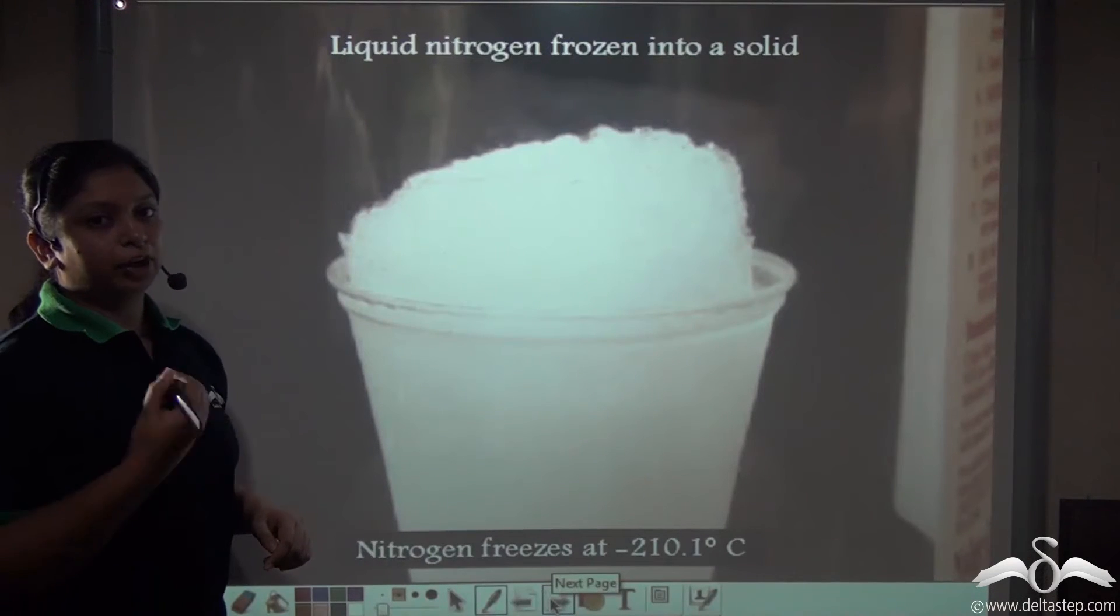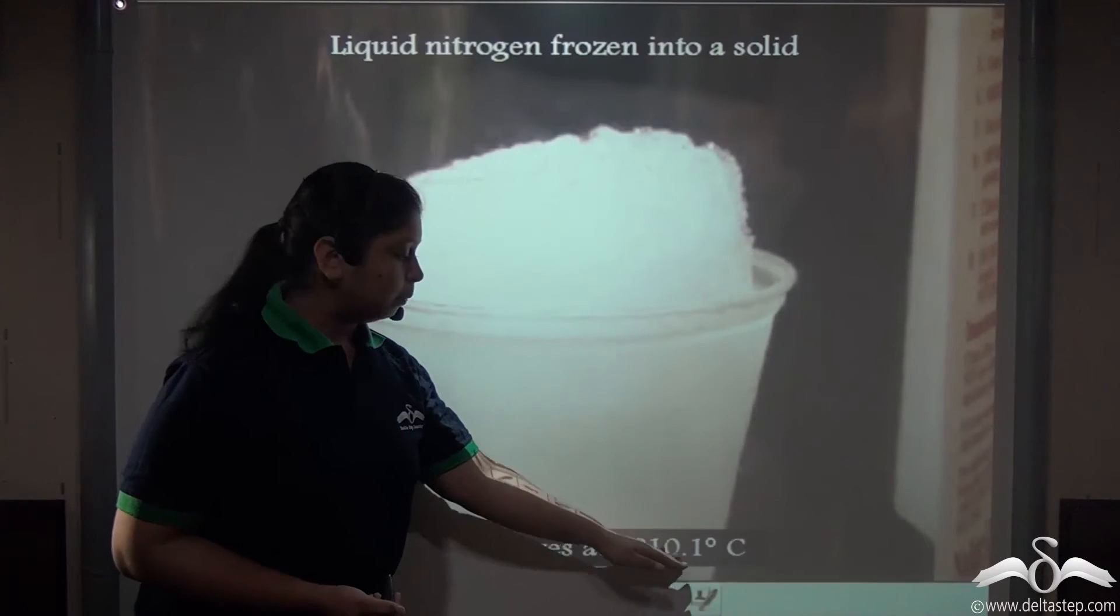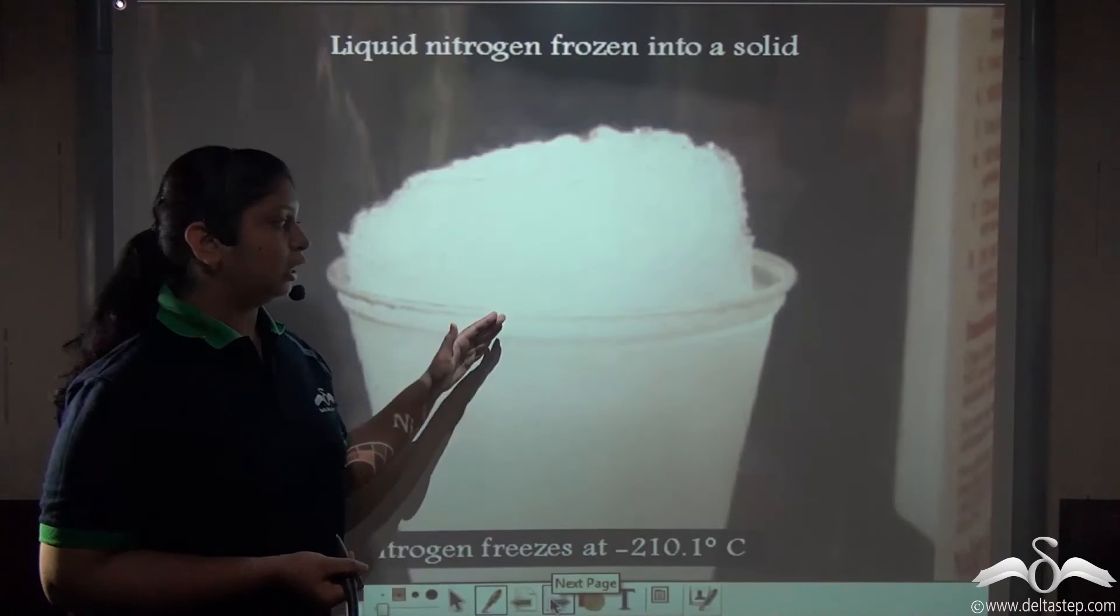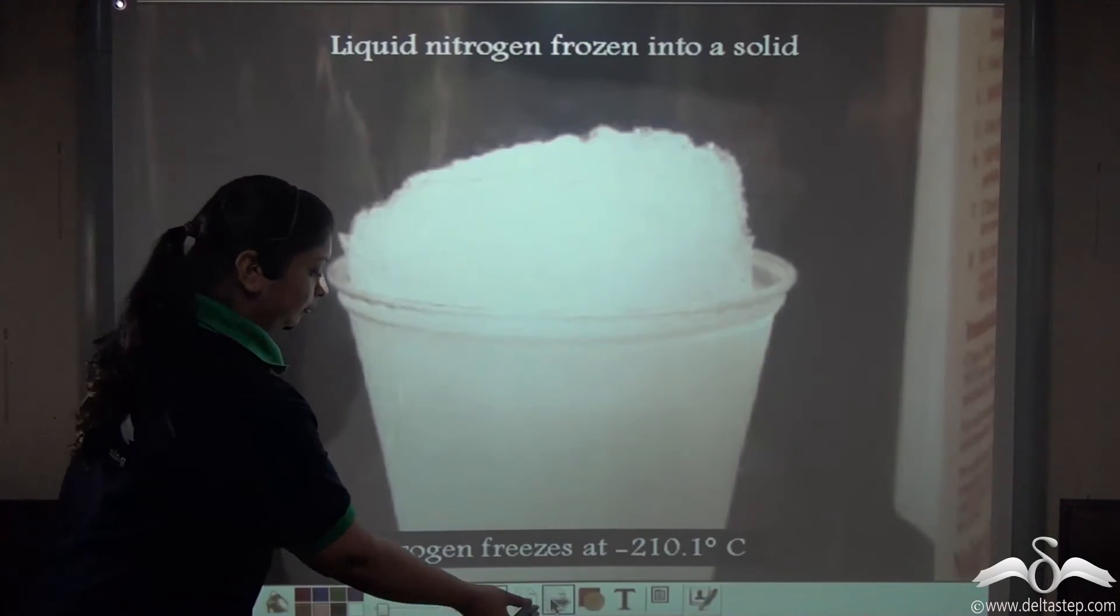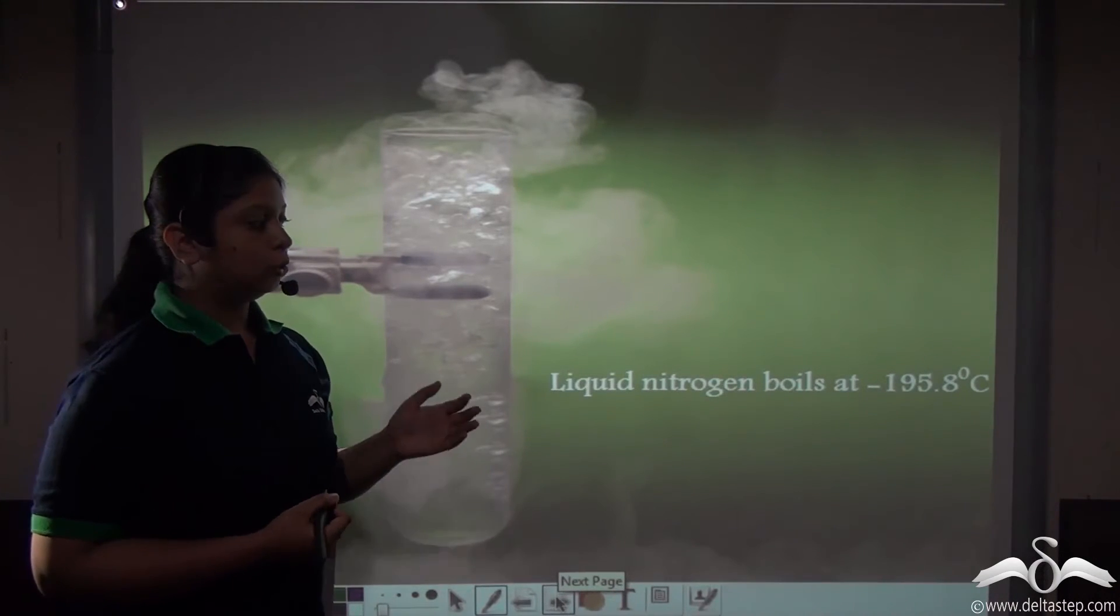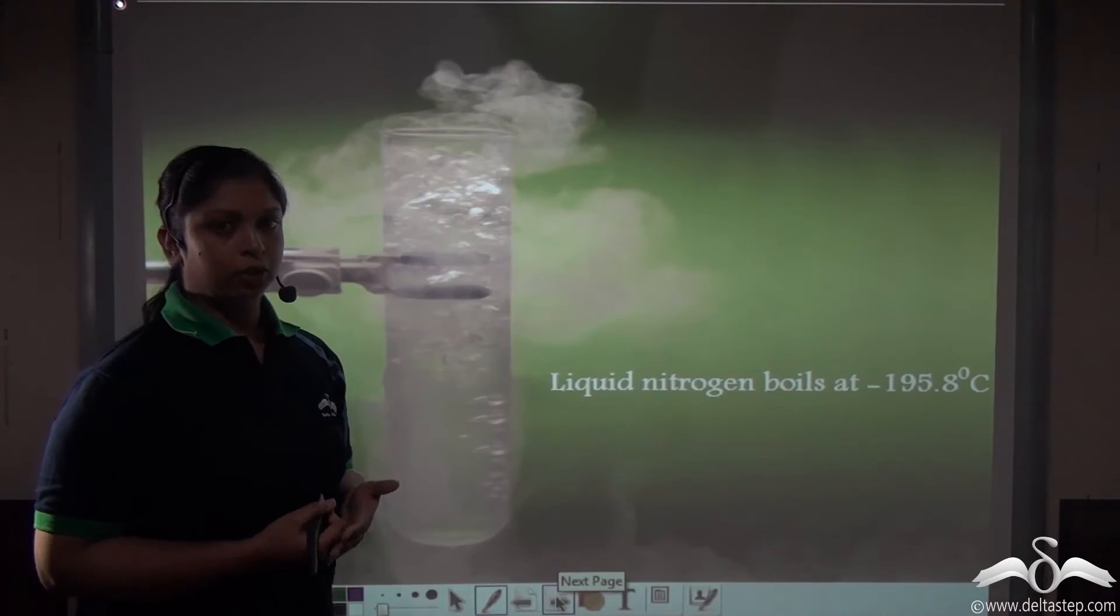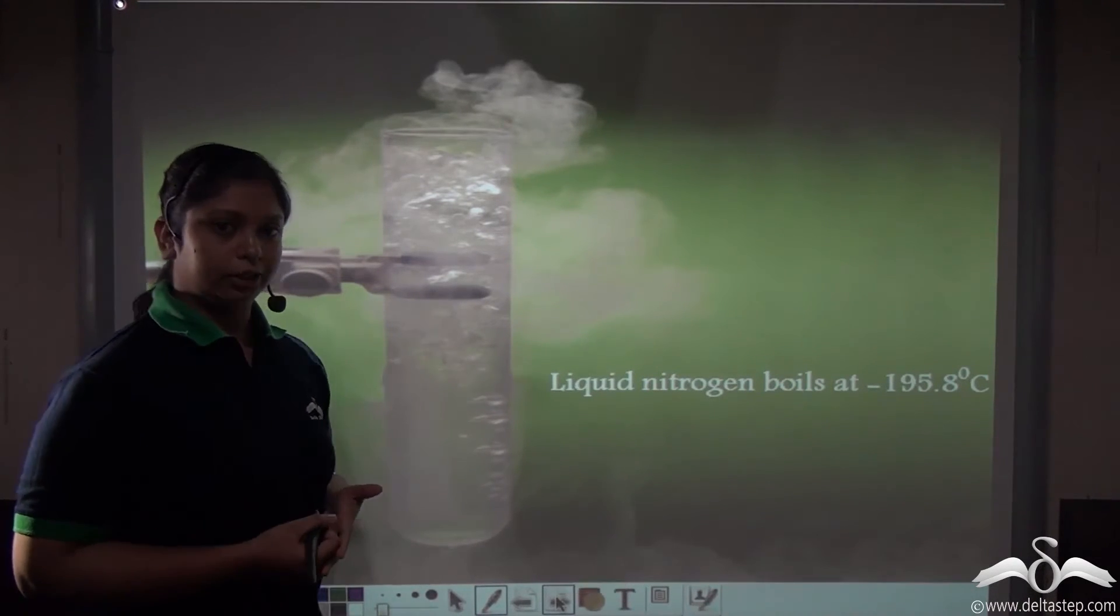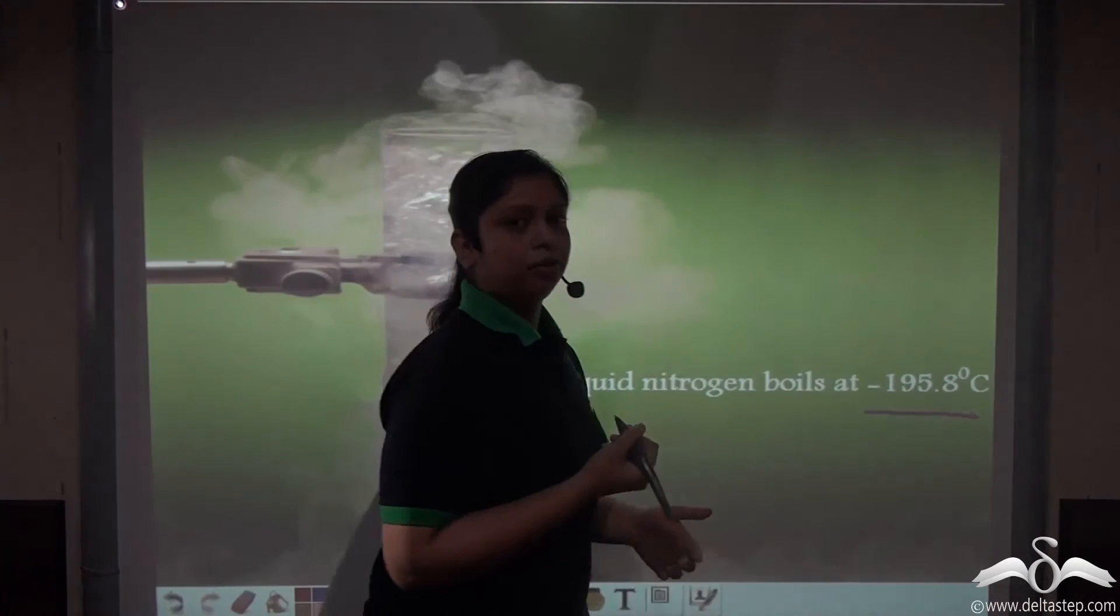If we further lower the temperature, suppose at minus 210.1 degrees Celsius, then what we get is solid nitrogen. If we heat liquid nitrogen to minus 195.8 degrees Celsius, it starts boiling. So the boiling point of liquid nitrogen is minus 195.8 degrees Celsius.